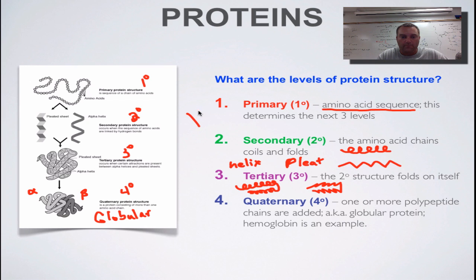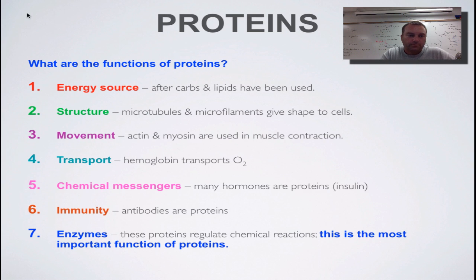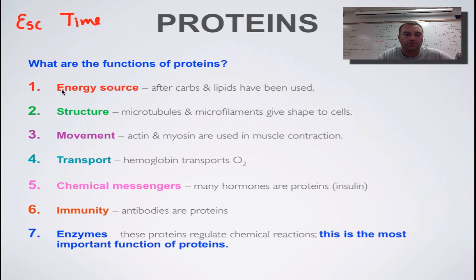Now, what are the seven functions of a protein? Our mnemonic device is 'ESCAPE TIME' — like the escape key on your keyboard plus the word 'time.' Looking at the first letter of each function in color: E is for energy, S is for structure, C is for chemical messengers, T is for transport, I is for immunity, M is for movement, and E is for enzymes. Let's look at all of these in more detail.